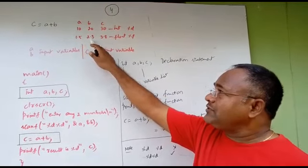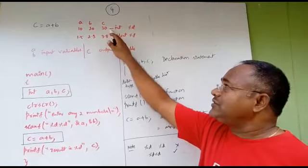If A is 1.5 and B is 2.3, then it is 3.8. So we can use either integer or float here.